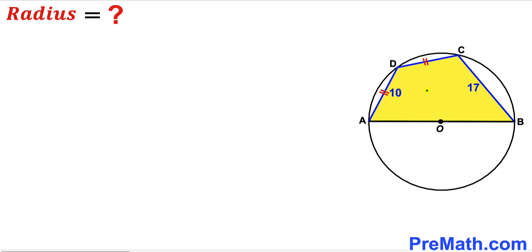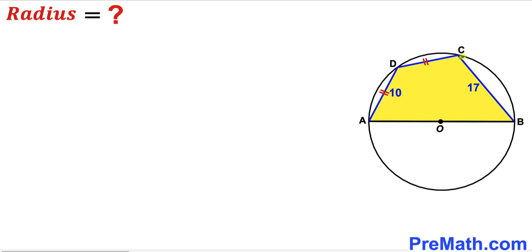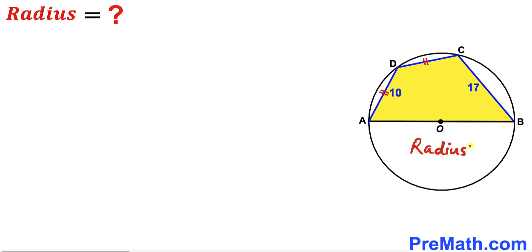Welcome to PreMath. In this video we have a yellow shaded cyclic quadrilateral ABCD fully inscribed in a circle with center O, such that chord AD equals chord CD. Both chords are 10 units long, chord BC is 17 units, and AB is the diameter of the circle. Our task is to calculate the radius of this circle.